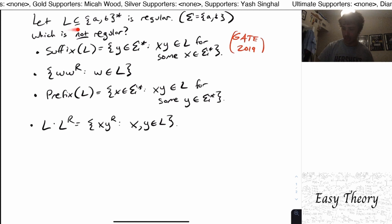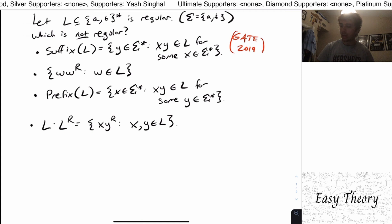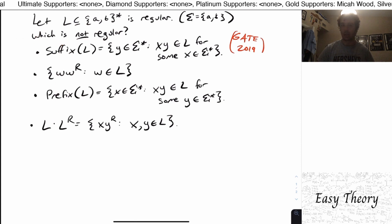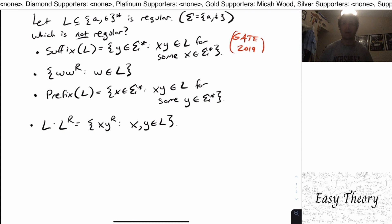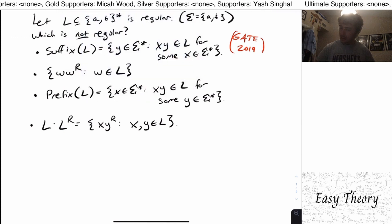With that out of the way, let's talk about this question, which comes from a GATE 2019 exam. This is the language of all strings in a language L, which is a subset of {a,b}*, so the alphabet is just {a,b} — some arbitrary regular language. We want to answer the question of which one of these four options is not regular. Pause the video and try to figure out whether it's the first, second, third, or fourth — there's only one answer. The answer is actually the second one.